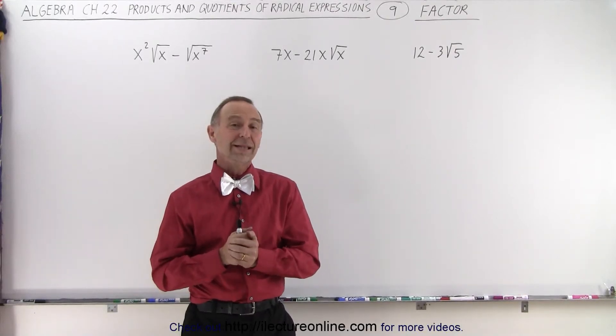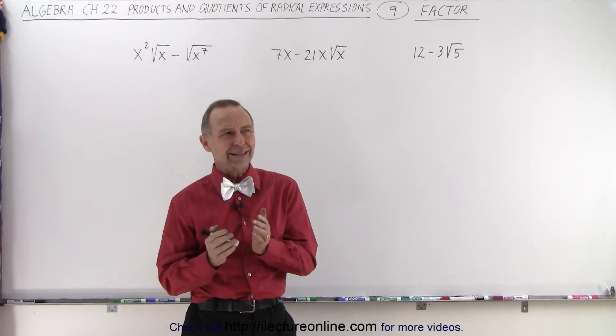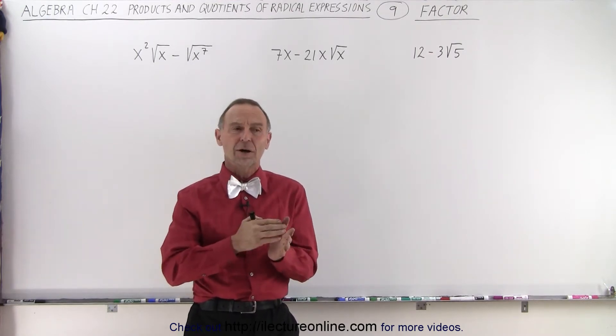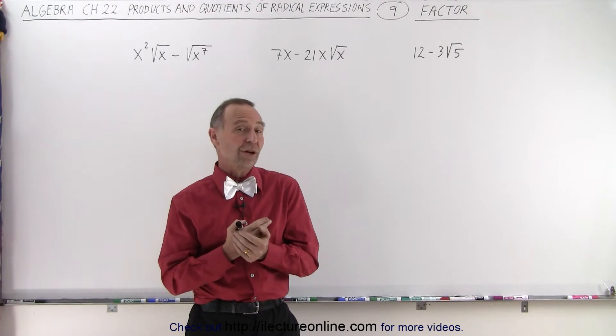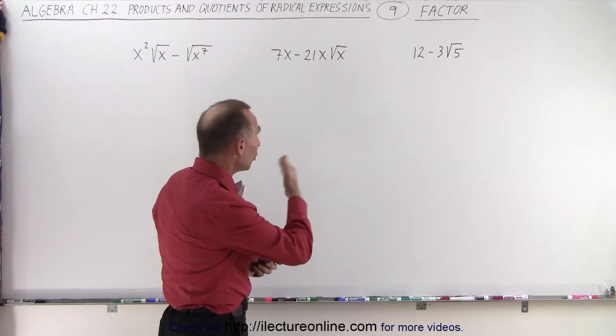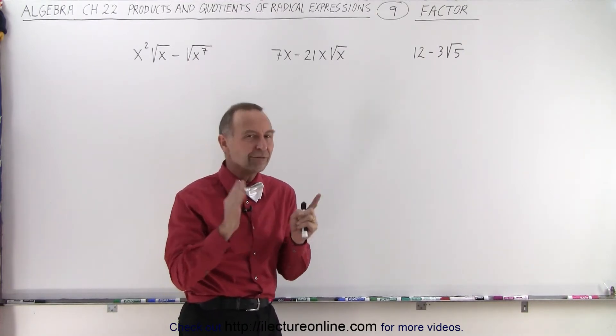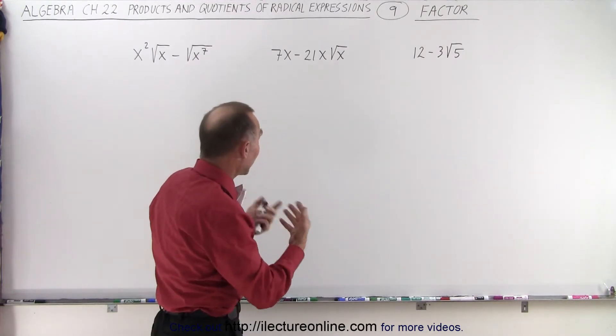Welcome to our Lecture Online. Now let's try to factor some of these expressions. It's kind of like the opposite direction of multiplying, or the opposite direction of using the distributive property. So what we need to do in each binomial is see what is common. Sometimes it's the factor in front of the radical, sometimes it's the radical itself.